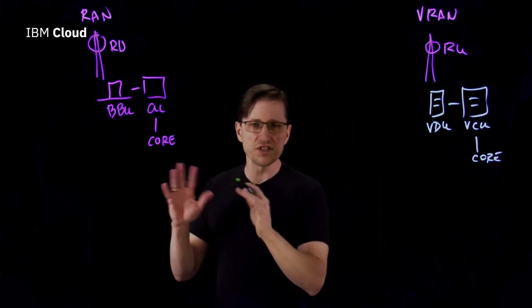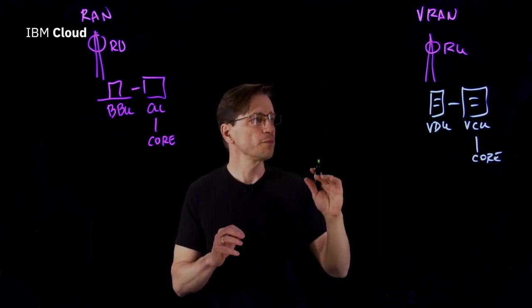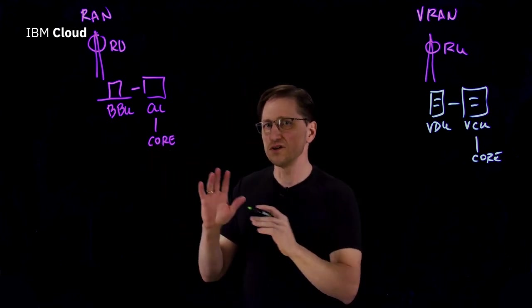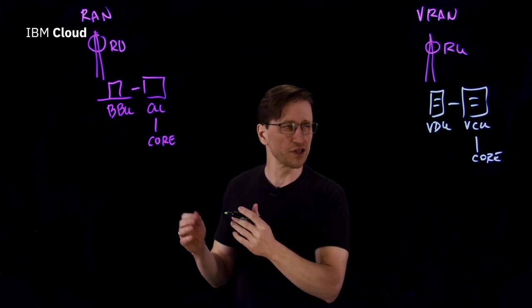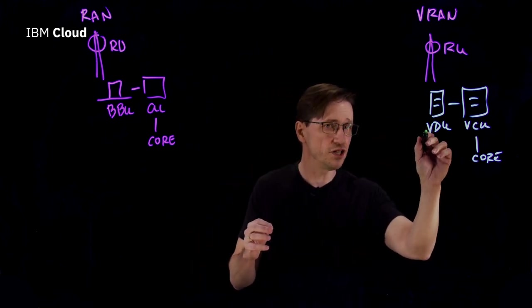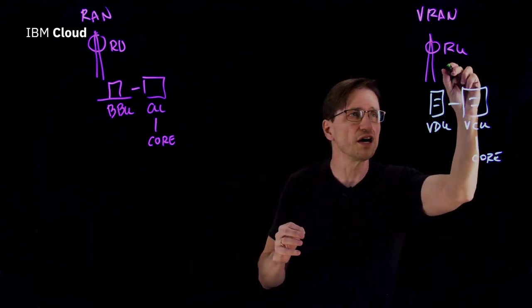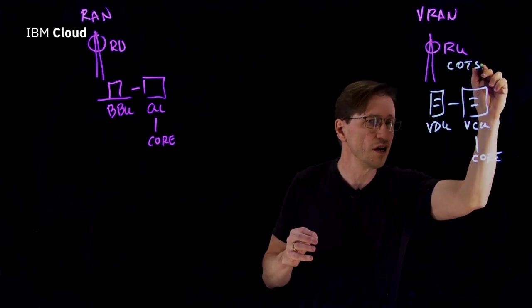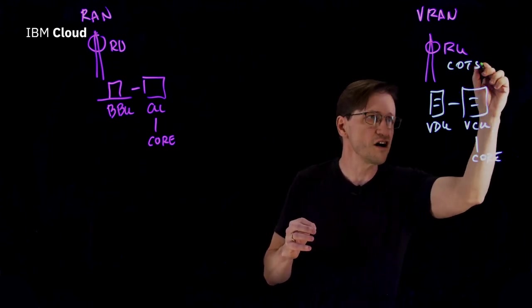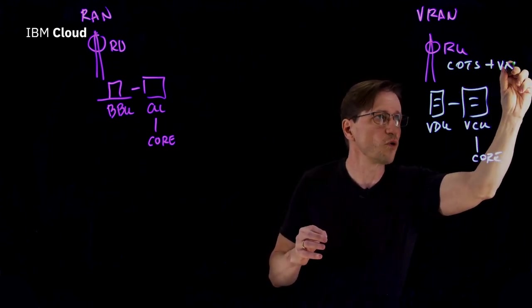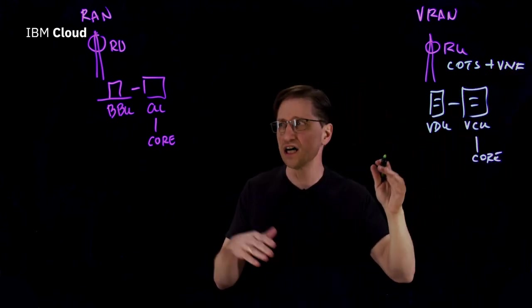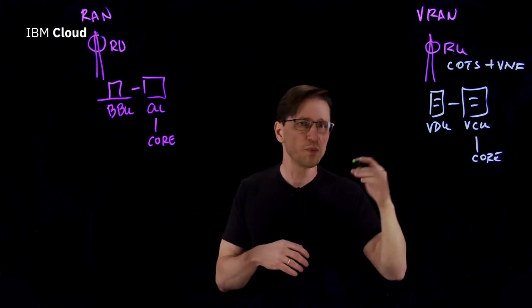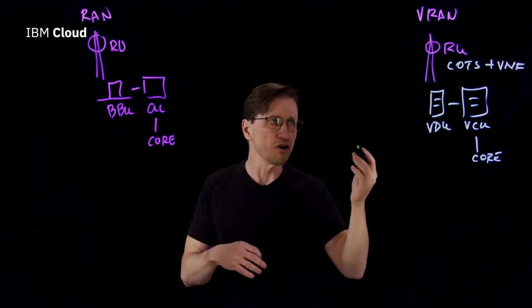So on the surface, these look pretty much the same. But there are some key differences. The BBU is a fixed piece of hardware, proprietary with fixed capacity. On the other hand, the VDU and VCU run on commercial off-the-shelf hardware. And then installed on that is software, called a VNF, or Virtual Network Function, that provides the same functionality as the BBU but using software on commercial off-the-shelf hardware.